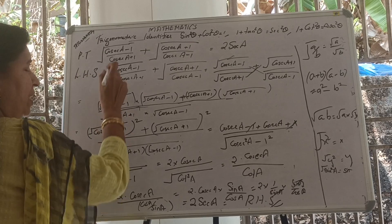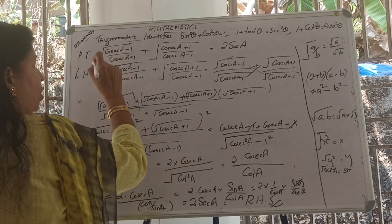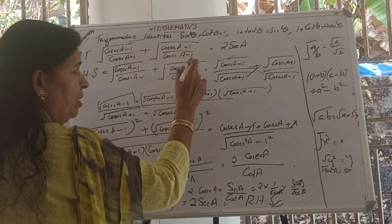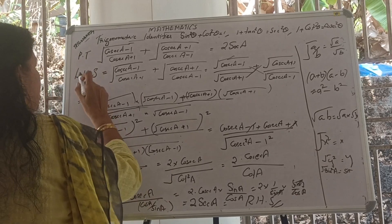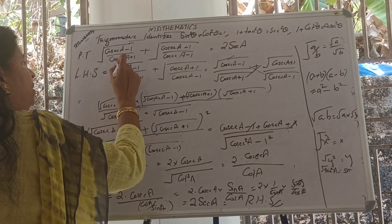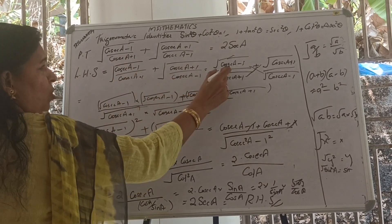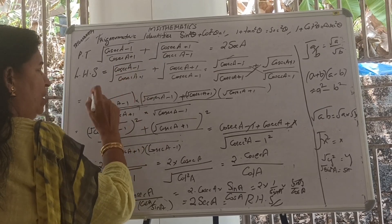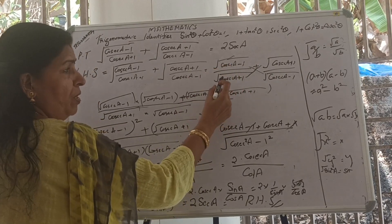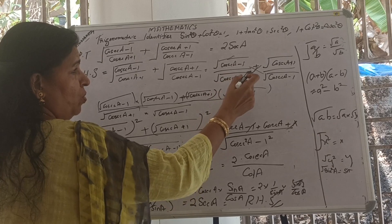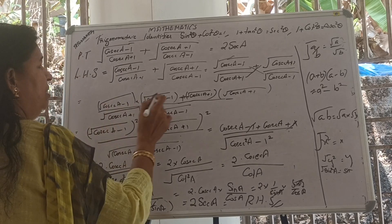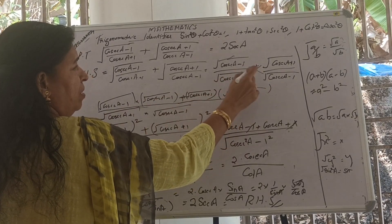Now, prove that square root of (cosec A minus 1) by (cosec A plus 1) plus square root of (cosec A plus 1) by (cosec A minus 1) equals 2 cosec A. Starting from LHS, using the identity square root of (a by b) equals square root of a by square root of b, we rationalize the terms.